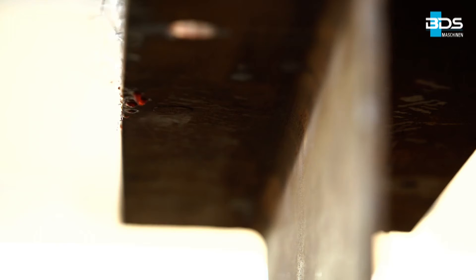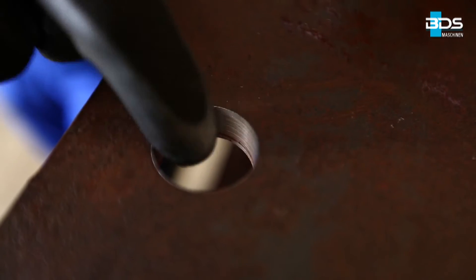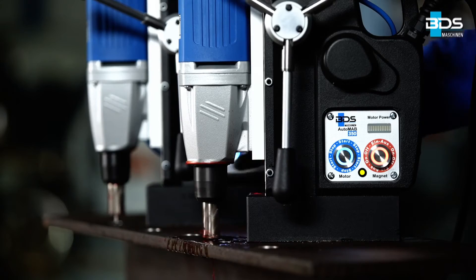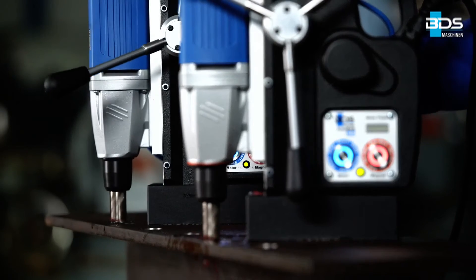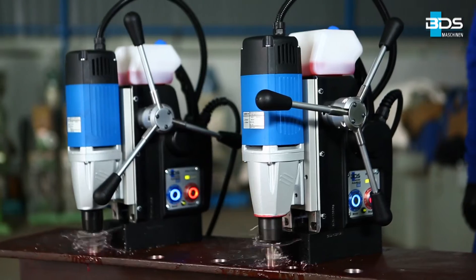Once the hole is drilled, the intelligent sensor of the machine knows it and then changes the feed to automatic reverse. The automatic magnetic drilling machine is the best option for drilling multiple holes at the same time.